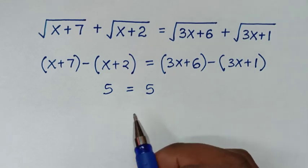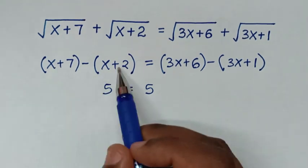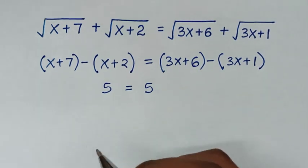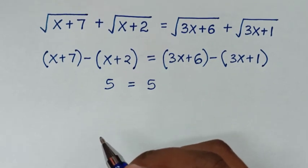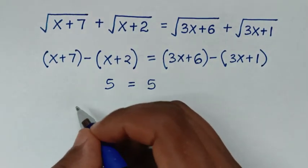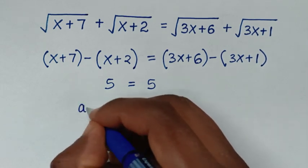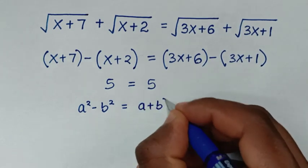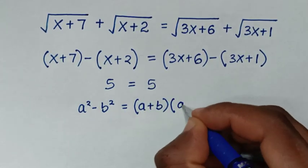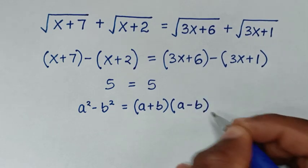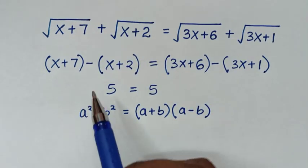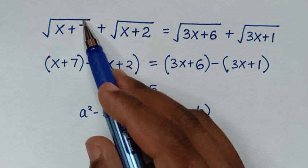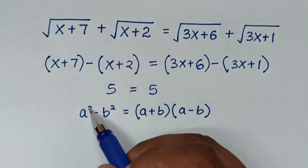In the next step, because we have the same difference between the expressions inside the square roots, we will apply the difference of squares method. The rule is: a squared minus b squared equals (a plus b)(a minus b).